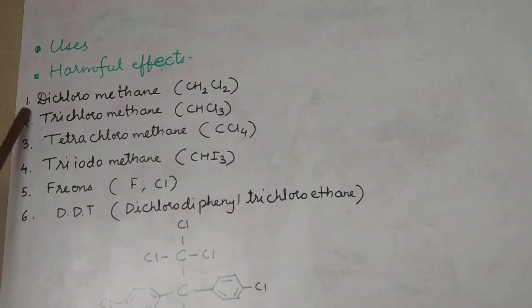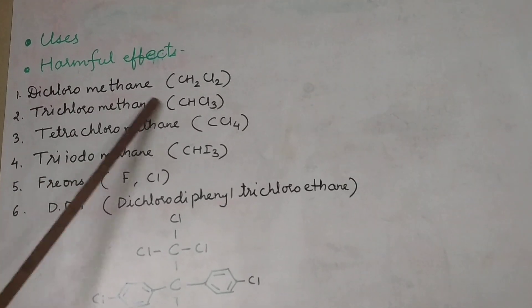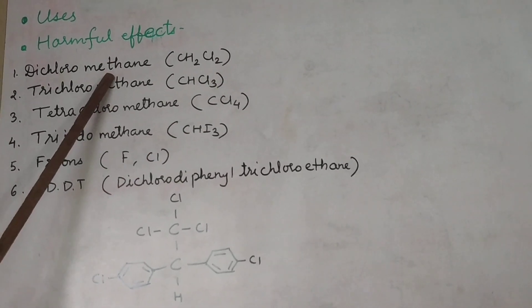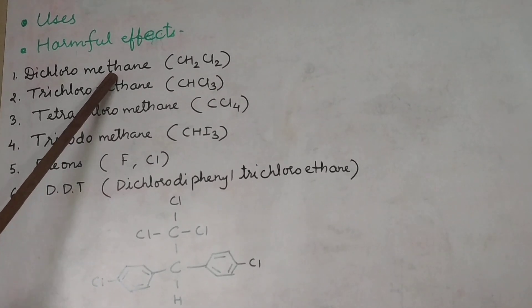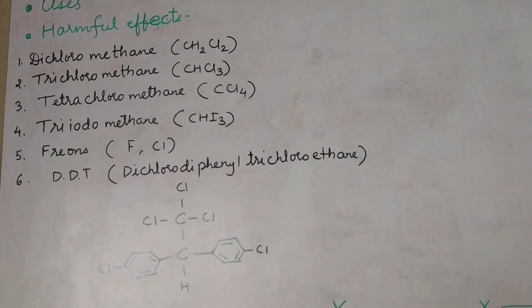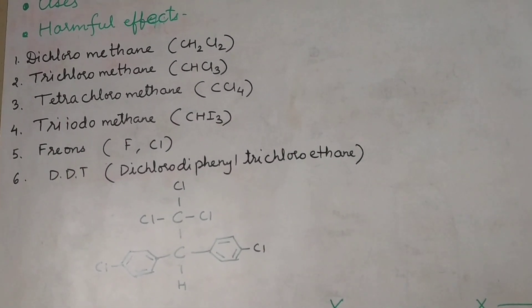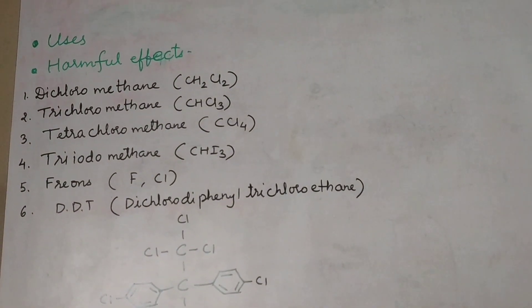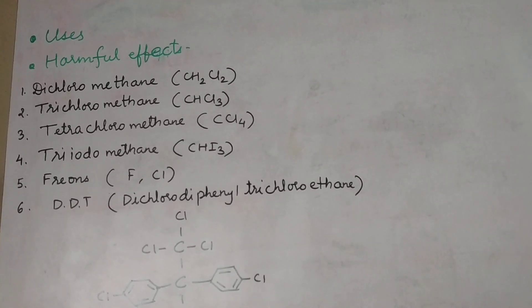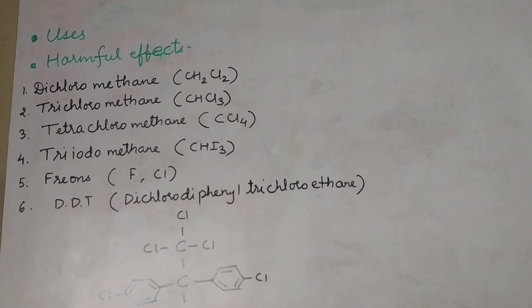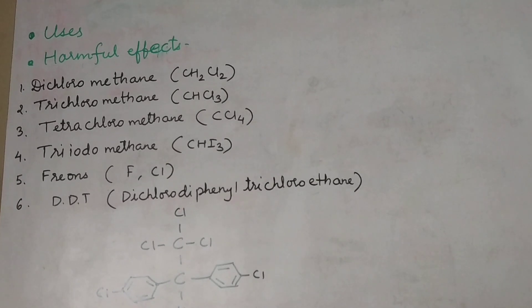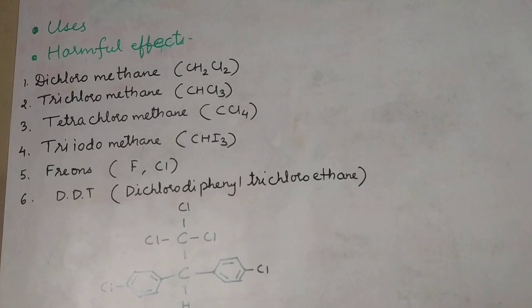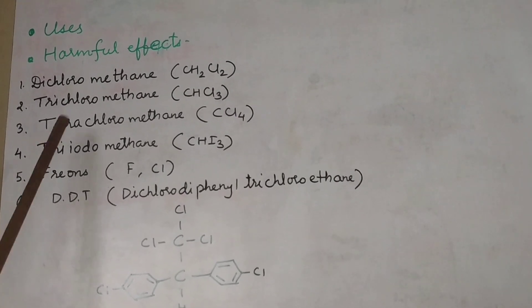First compound, we are going to see dichloromethane having formula CH2Cl2 and it is commonly called as methylene dichloride. Now, we are going to see the uses of this compound. This compound is used as a solvent. It is liquid used as solvent and the harmful effects are it can produce dizziness, fatigue, weakness and it can even damage us. These are harmful effects.